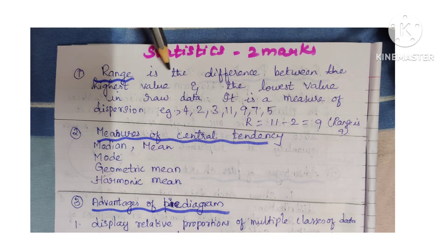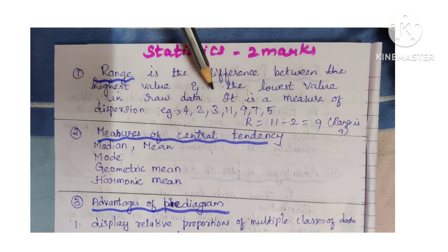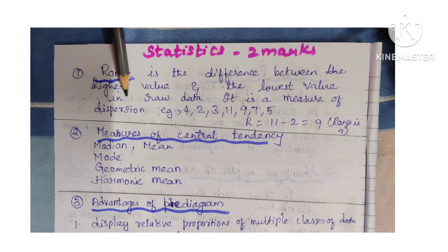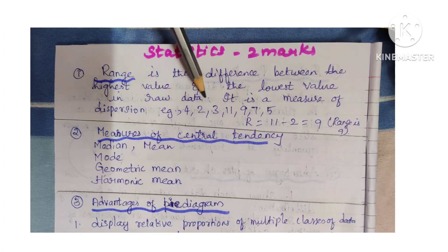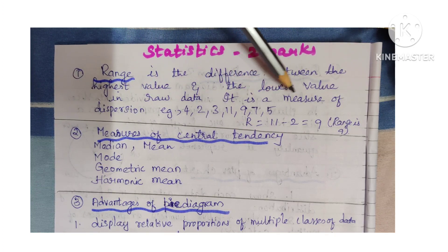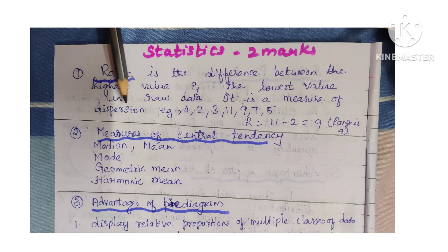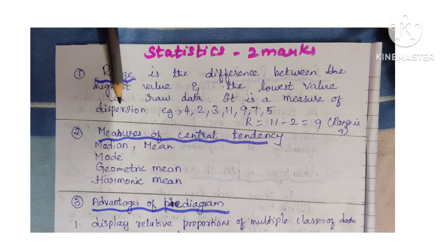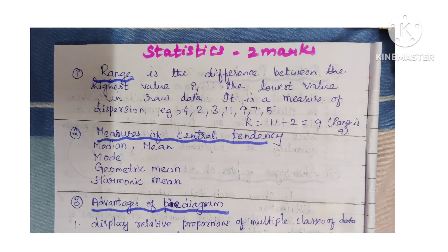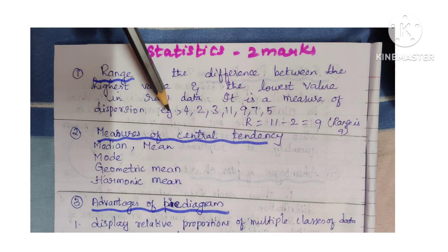Range is the difference between the highest value and the lowest value in a given set of data or in raw data. It is a measure of dispersion. Range is also a measure of dispersion. Example: